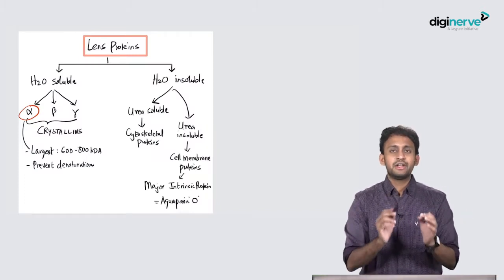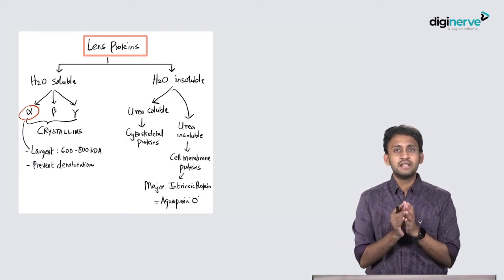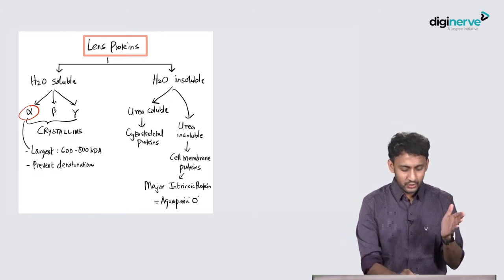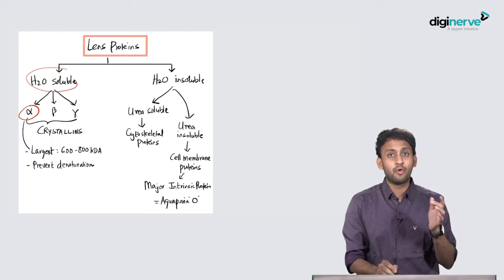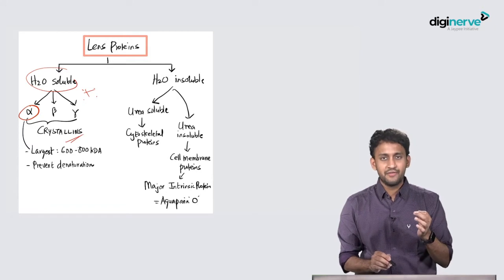The most important concept to understand is lens proteins. Lens proteins are of two types: water insoluble and water soluble. Water soluble proteins are the crystallines. You're of three types: alpha, beta, and gamma crystallines.